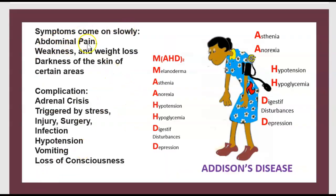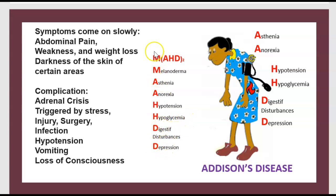Symptoms come on slowly: abdominal pain, weakness, weight loss, and darkening of the skin in certain areas. There is asthenia, anorexia, hypotension, hypoglycemia, digestive disturbance, and depression. A mnemonic: M for melanodermia, A for asthenia, A for anorexia, H for hypotension, H for hypoglycemia, D for digestive disturbance, and D for depression.